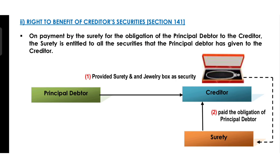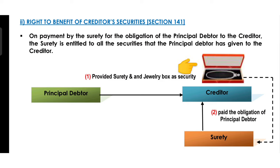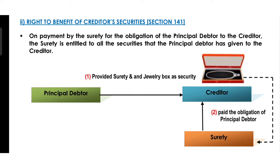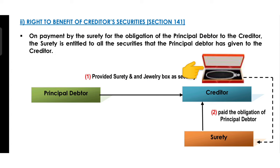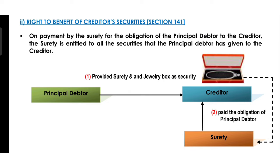Right number two is the right to benefit of creditor's securities. Let's understand this with an example. The principal debtor has taken a loan from the creditor with a surety guarantee, and as additional security, a jewelry box has also been kept with the creditor. Now, on the due date of payment, if the principal debtor has not fulfilled his obligation and has not given the payment, the creditor has two options: ask the surety for the money, or use the jewelry kept as security. If the creditor proceeds via the surety, then the surety will have the right to receive that jewelry which is in the custody of the creditor.